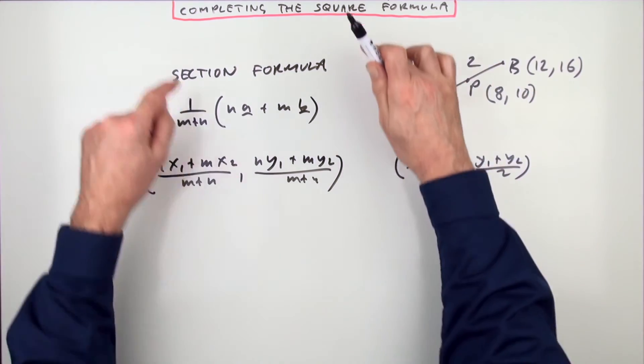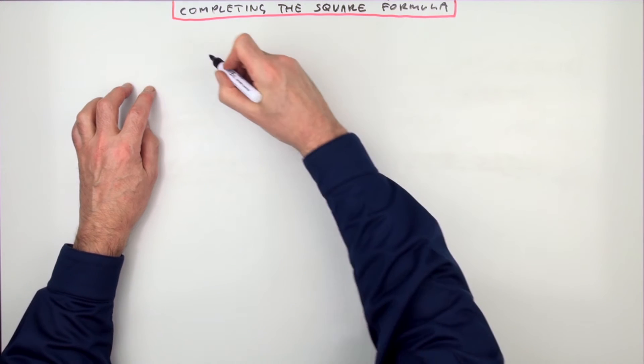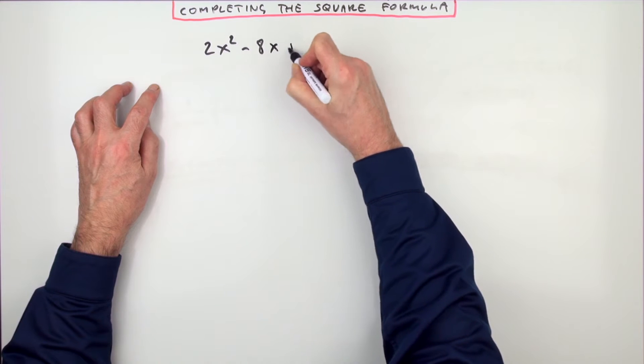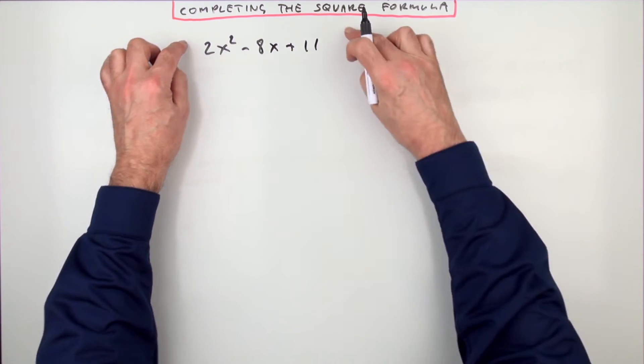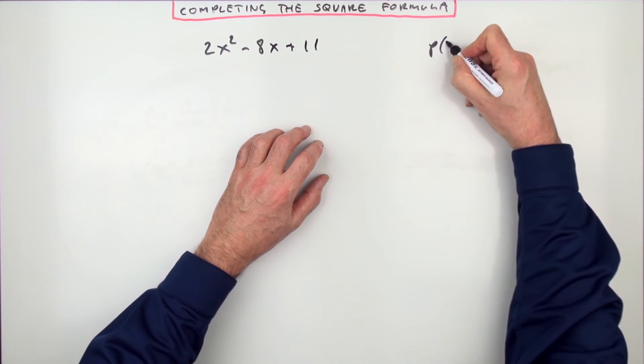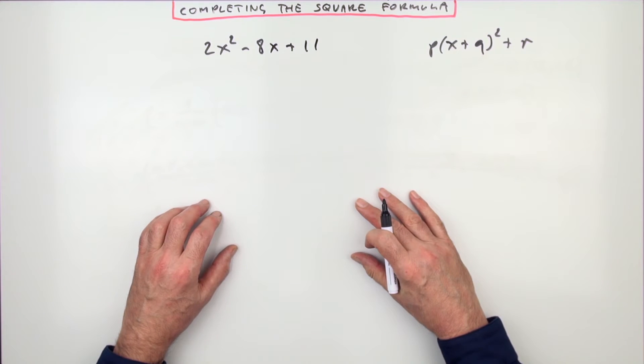And so it is with completing the square. So, completing the square then. Well, in last year's higher, you had this to do. It gave you this quadratic expression, and it said, write it in the form of, they don't tend to use the words complete the square, so write it in the form of P times x plus q squared plus r, or something like that.